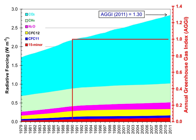Examples of the atmospheric lifetime and GWP relative to CO2 for several greenhouse gases are given in the following table. The use of CFC-12 has been phased out due to its ozone depleting properties. The phasing out of less active HCFC compounds will be completed in 2030.